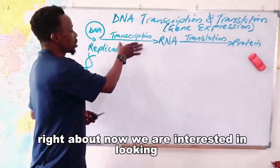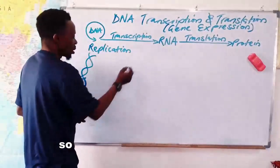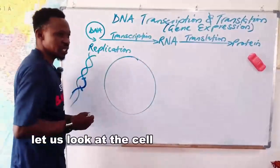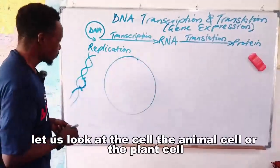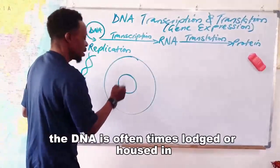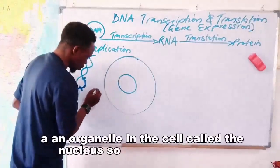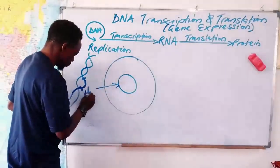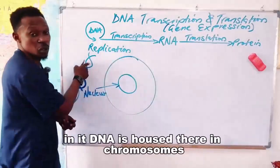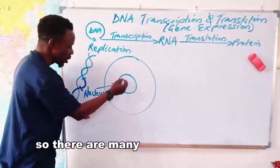Now let us take a closer look at transcription and translation. Let us look at the cell — the animal cell or the plant cell. The DNA is oftentimes lodged or housed in an organelle in the cell called the nucleus. The DNA is housed there in chromosomes, packed and arranged in chromosomes. There are many chromosomes here, different numbers depending on the species.